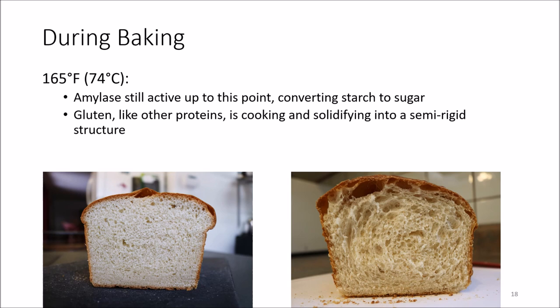At 165°F (74°C), amylase is still active — still converting some starch to sugar, helping develop flavor. Gluten, like any other protein, is cooking and solidifying, forming a semi-rigid structure that is still soft yet strong enough to hold those air bubbles, as you can see in the two figures on the bottom.